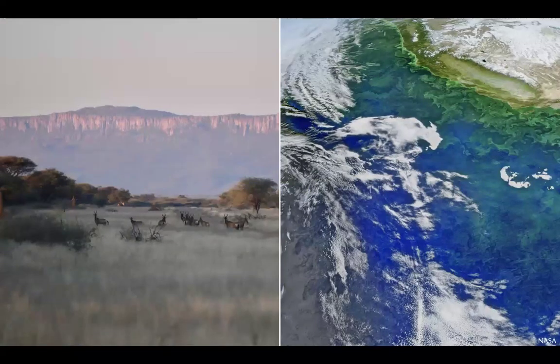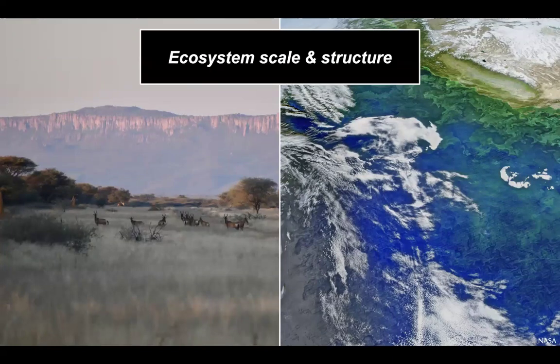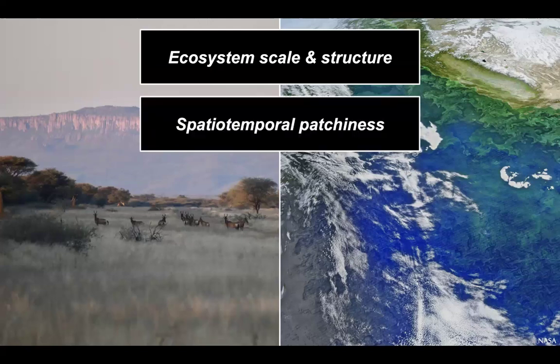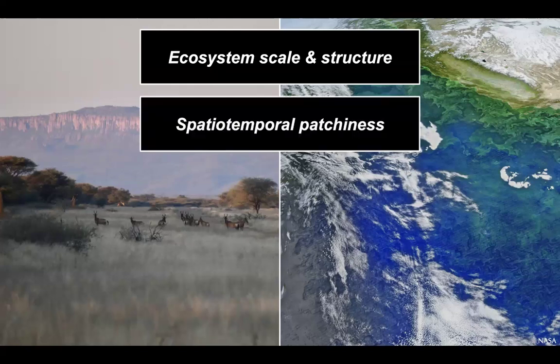If we zoom out and think about this in relation to better-understood terrestrial ecosystems, there are really key differences in terms of ecosystem scale and structure, the nature of spatiotemporal resource patchiness, and the sensory modalities and communication ranges of animals inhabiting these ecosystems. From the standpoint of understanding how animals use and produce information to drive their behaviors, these are all really important factors to consider.